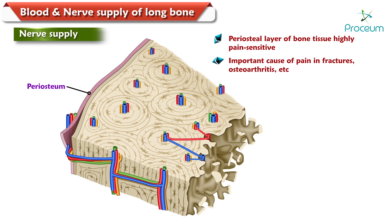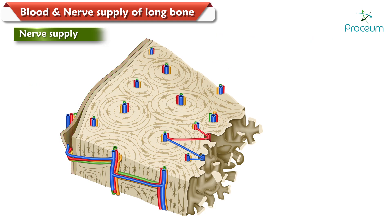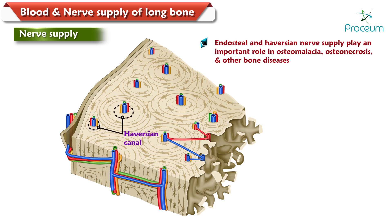The periosteal layer of the bone tissue is highly pain sensitive and an important cause of pain in several disease conditions causing bone pain, like fractures, osteoarthritis, etc. However, in certain diseases the endosteal and Haversian nerve supply seems to play an important role — for example, in osteomalacia, osteonecrosis, and other bone diseases. Thus there are several types of bone pain, each with many potential sources or origins of cause.